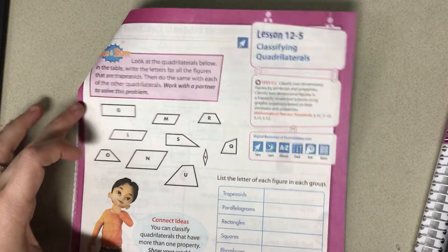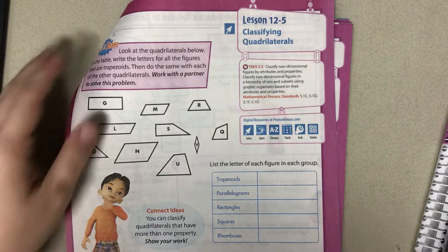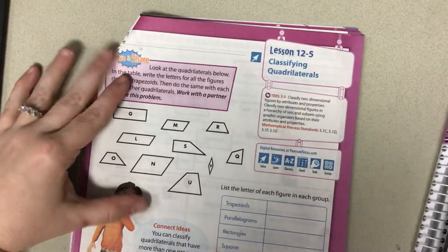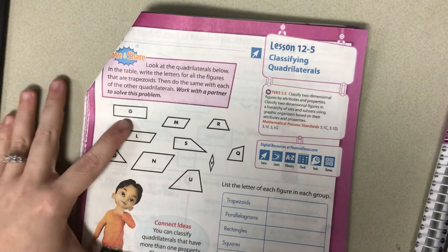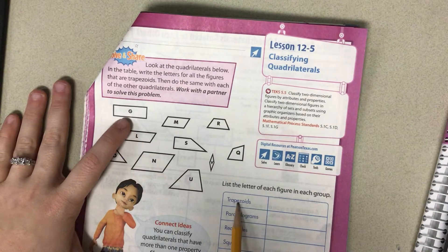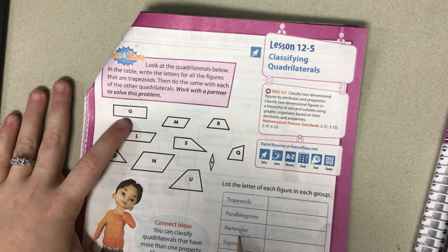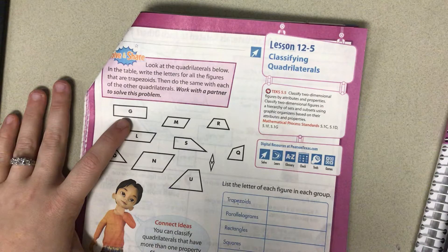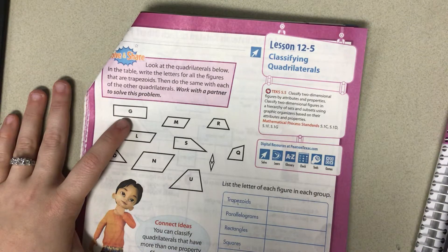So we kind of did this yesterday but we're going to go individually here. So let's start with G. Is it a trapezoid, a parallelogram, a rectangle, a square, or a rhombus? Remember they can be more than one.